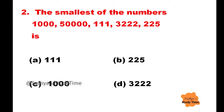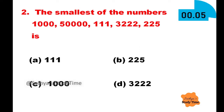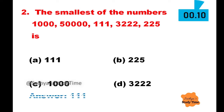Question 2: The smallest of the numbers 1000, 50,000, 111, 3222, 225 is. The options are given. Your time starts now. The answer is 111, option E.